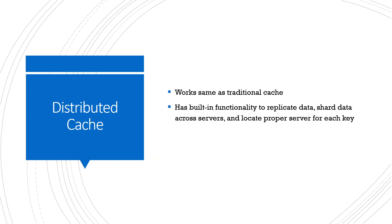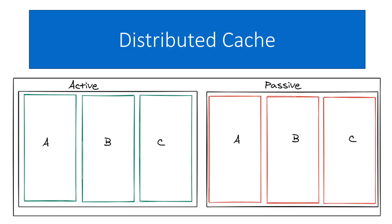Building off simple caching, we have distributed cache, which works the same way but has built-in functionality to replicate and shard data across multiple servers when the amount of data is too big for a single server, and to locate the proper server for each key. Visualized, you'd have active servers holding different keys, and also passive backup servers. If one server goes down, your application detects that and reroutes to the passive server, which becomes the new active one.